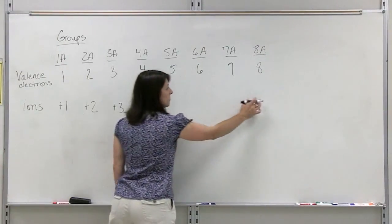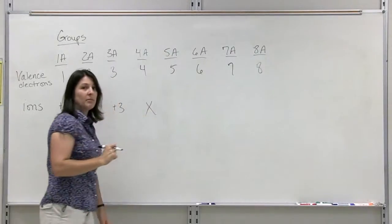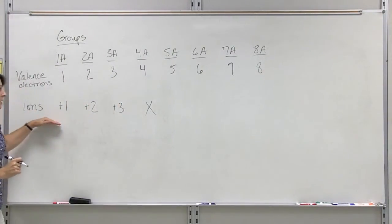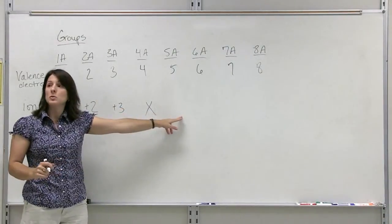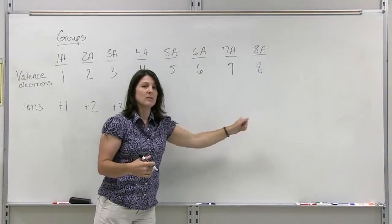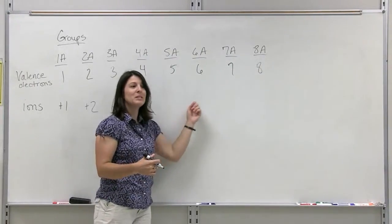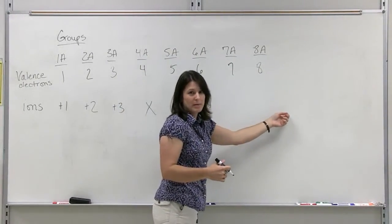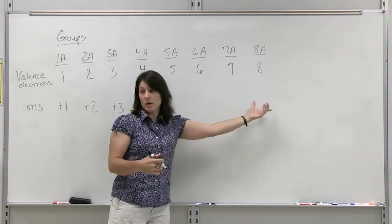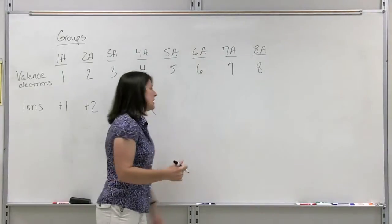Now the nonmetals, starting group 5A over on this side, if we followed this same pattern, they would have to lose five electrons to get to eight valence electrons. Or the easier way would be to gain three. It's easier for these guys to gain three electrons to reach eight.